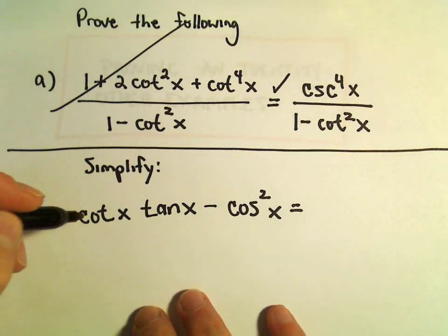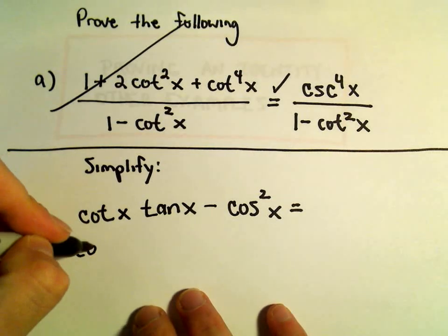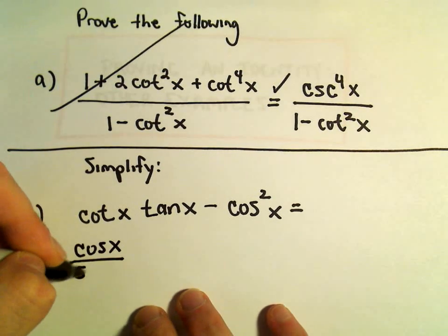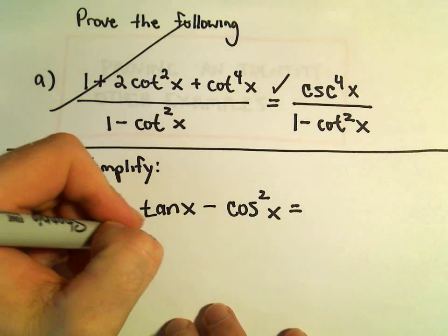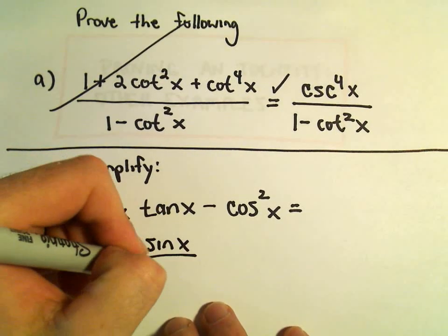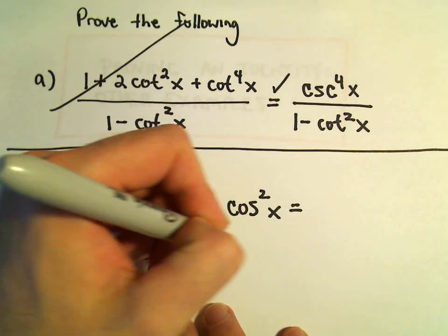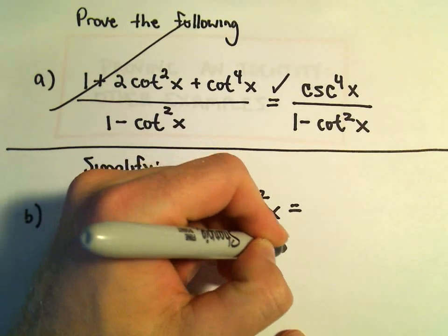I just turn everything into sines and cosines. So cotangent x, that's cosine x over sine x. Tangent of x is just sine x over cosine x. And then we still have our minus cosine squared x left over.